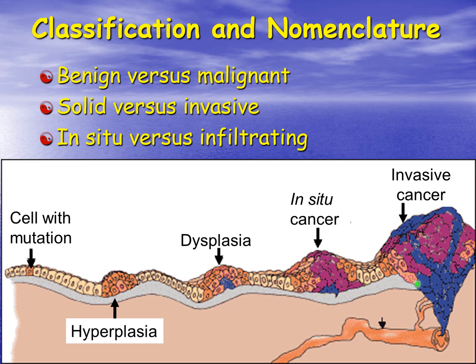Once, however, the cancer has crossed the basement membrane and has invaded local tissues, we then call that an invasive cancer.